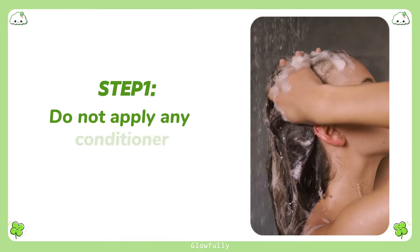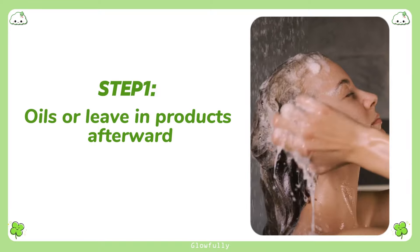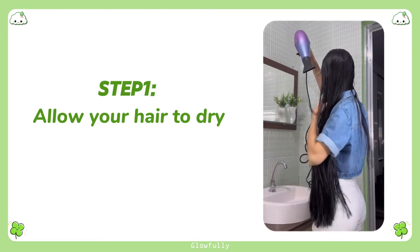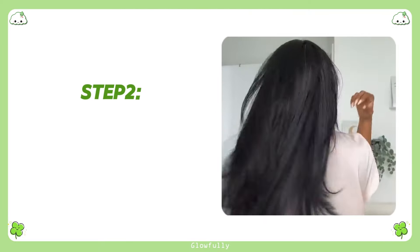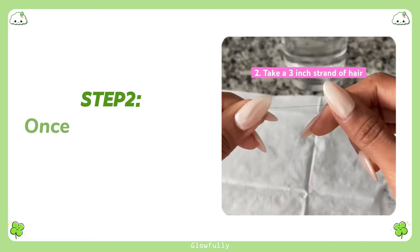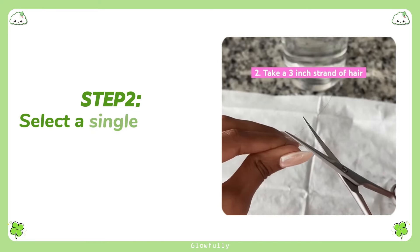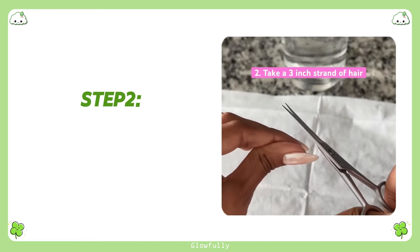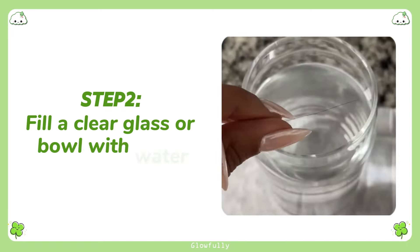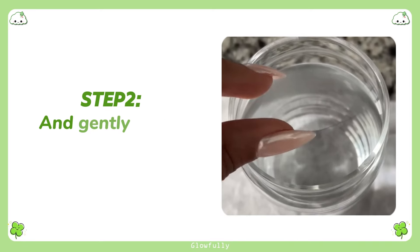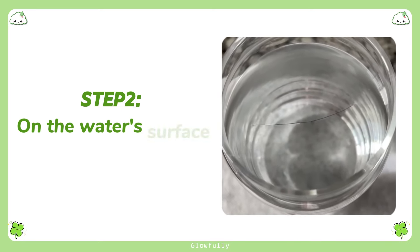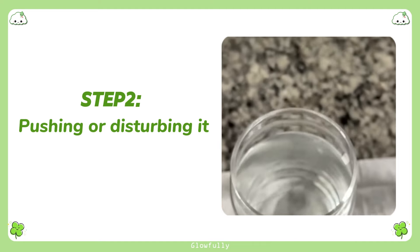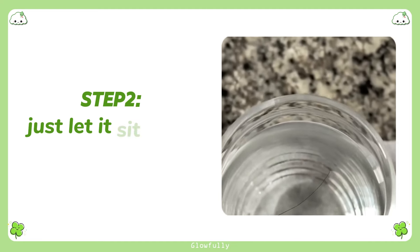Start by washing your hair with a clarifying shampoo. Do not apply any conditioner, oils, or leave-in products afterward. Allow your hair to dry completely before proceeding. Step 2: once your hair is dry, select a single strand about the length of your finger. Fill a clear glass or bowl with water, and gently place the hair strand on the water's surface. Avoid stirring, pushing, or disturbing it — just let it sit on top.